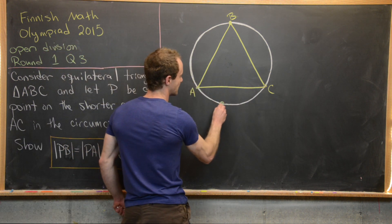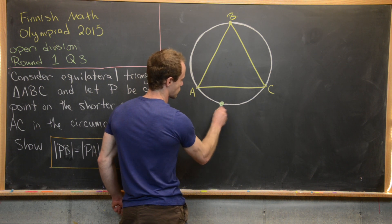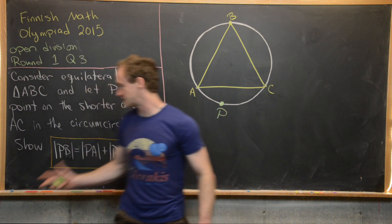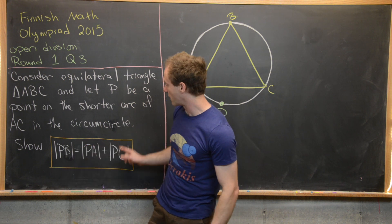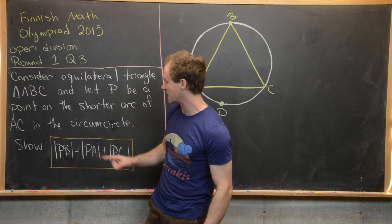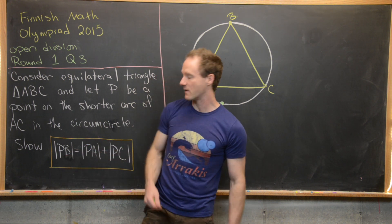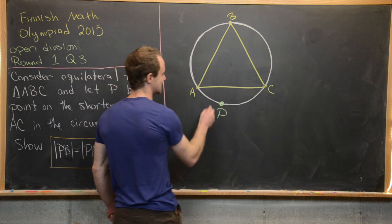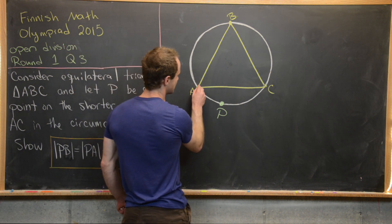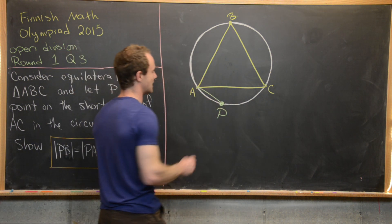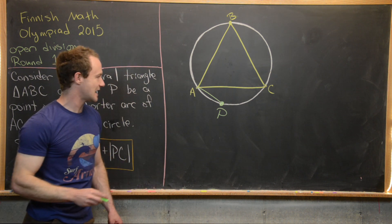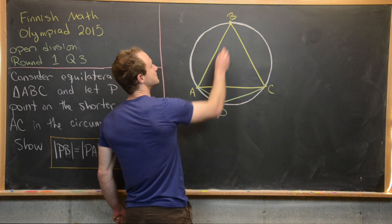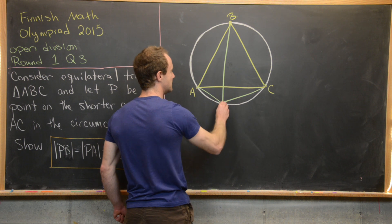I've already gotten a picture started. We've got our equilateral triangle ABC and a circle around it. P is on the short arc of AC, right here. Now we want to draw the line segments involving P and the vertices of the triangle: here's line segment PA, here's line segment PC, and here's line segment PB.